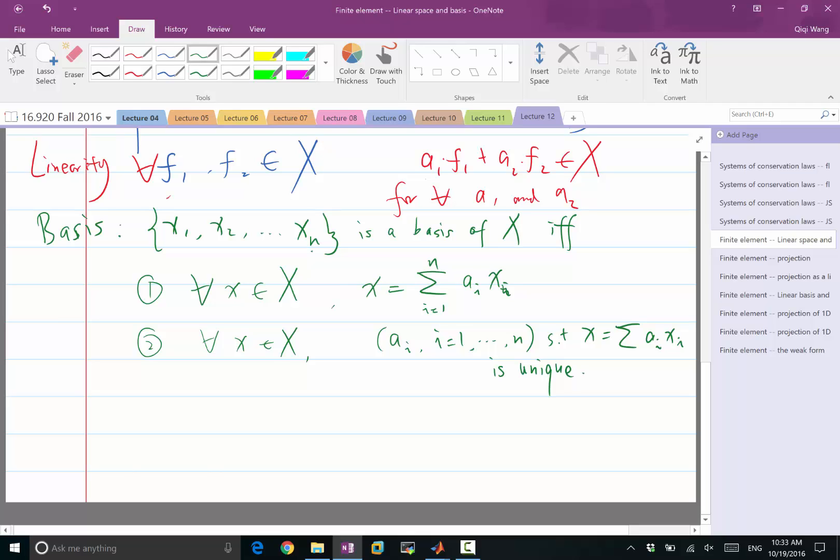Because if you can do that, xn is, of course, a member of x, right? And then xn has two different representations.